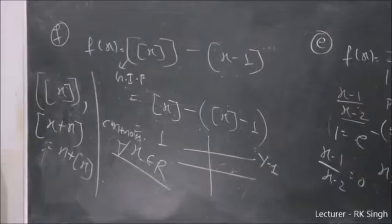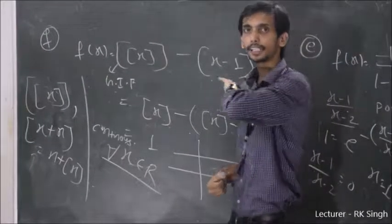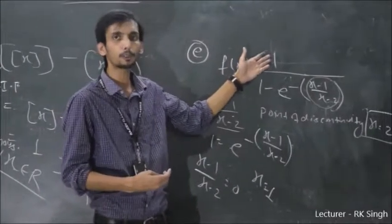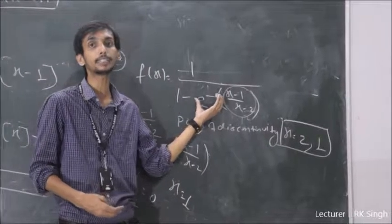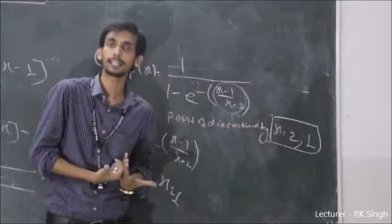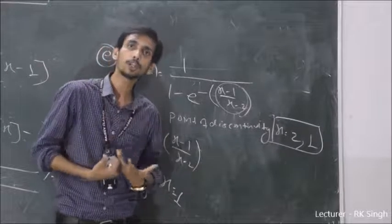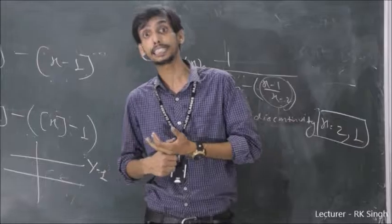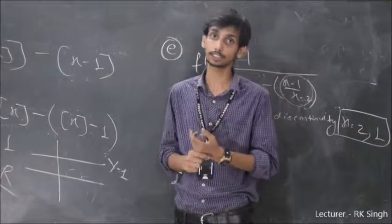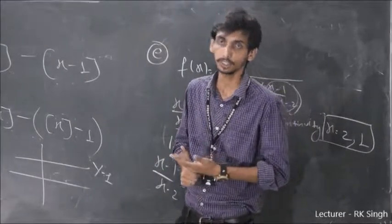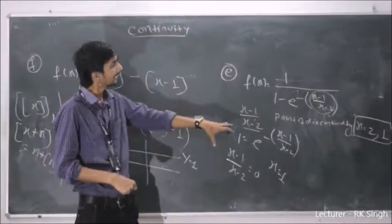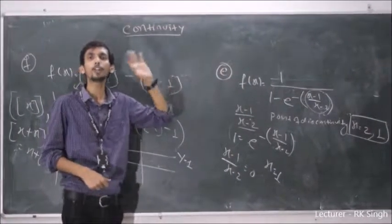The basic thing is we have to know what the concept is. If we have a function, we need to know where the function is defined. Where the function is not defined, there will be discontinuity. Then solve the question. If the denominator becomes zero, there will be discontinuity at that point.